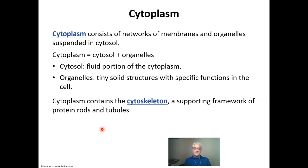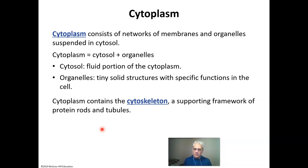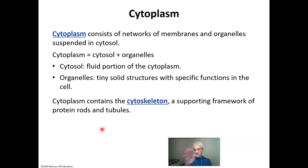Your cells have a skeleton, just like you have a bony skeleton — so do your cells. Your cells have a cytoskeleton. These are protein rods called microtubules, and they form a structural network to help the cell maintain its shape. We're going to talk all about the shapes of the cells when we get to Chapter 5.